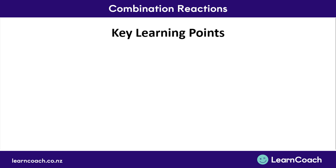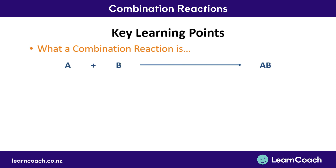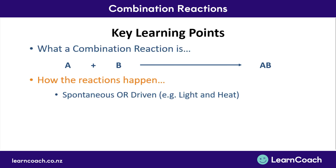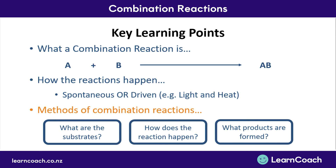That sums up our basic overview of combination reactions. Our key points are: what a combination reaction is — a reaction of two separate substances combining together to form a new substance; how the reaction happens — either spontaneously or driven by an external factor such as light or heat energy; and the methods of a combination reaction — what the substrates are, how the reaction occurs, and what products are formed.